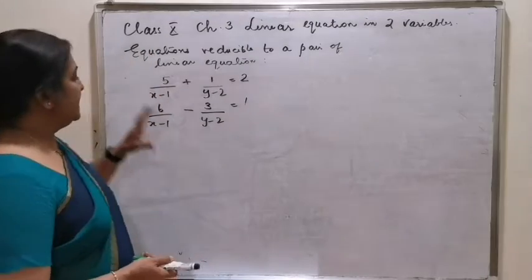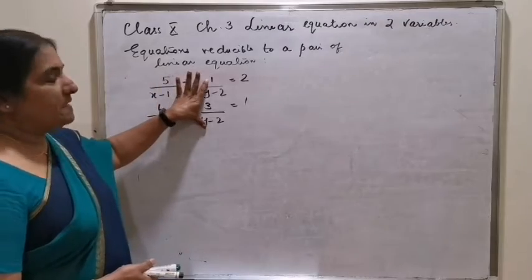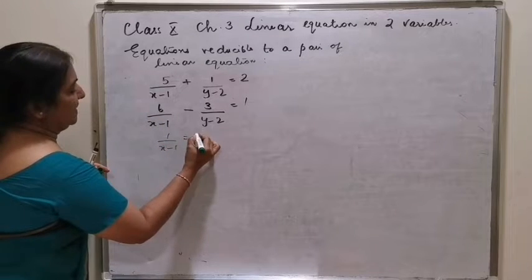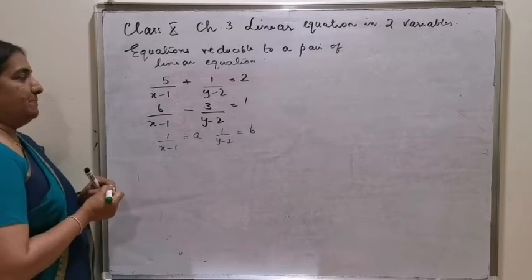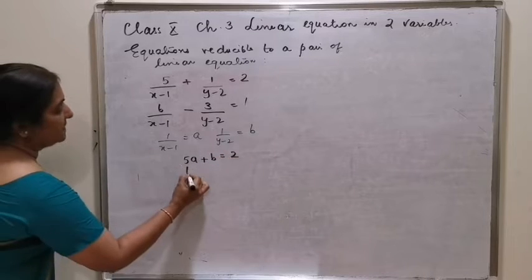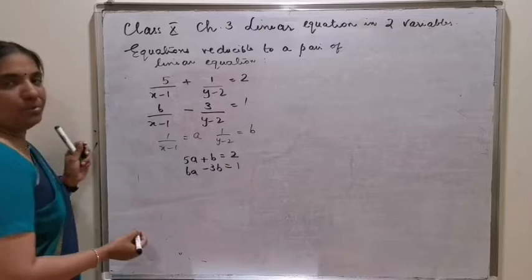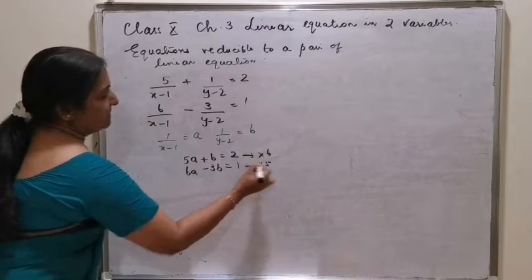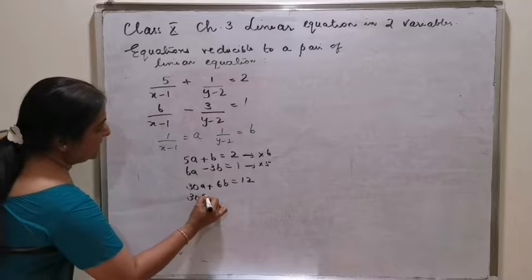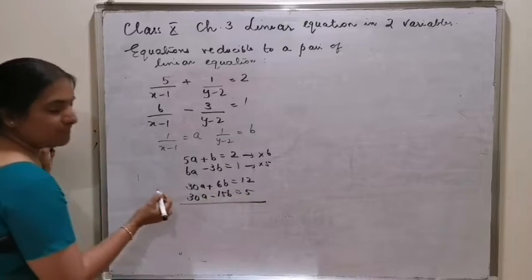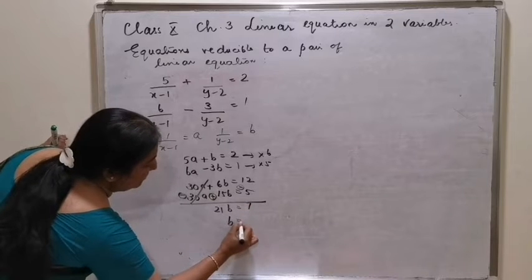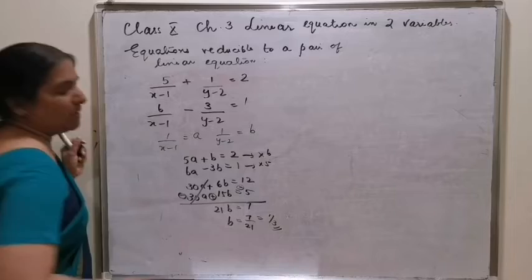Number 4: the pattern remains the same. The first terms are both 1 by x minus 1, and the second terms are both 1 by y minus 2. Let 1 by x minus 1 equal a and 1 by y minus 2 equal b. The equations become 5a plus b is equal to 2, and 6a minus 3b is equal to 1. Multiplying by 6 and 5: 30a plus 6b equals 12, and 30a minus 15b equals 5. Changing signs: 21b equals 7, so b is 1 by 3.